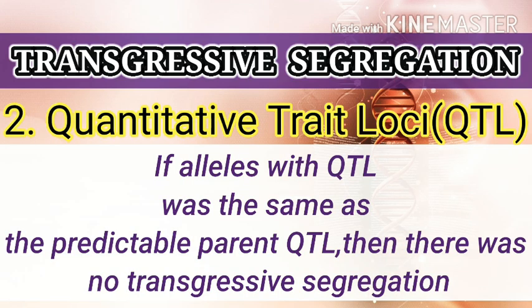The second method is the QTL test, where QTL means Quantitative Trait Loci. If alleles with QTL are opposed — either by over-dominance or under-dominance of the parental QTL — then it indicates transgressive segregation. If alleles with QTL were the same as the predictable parental QTL, then there was no transgressive segregation.